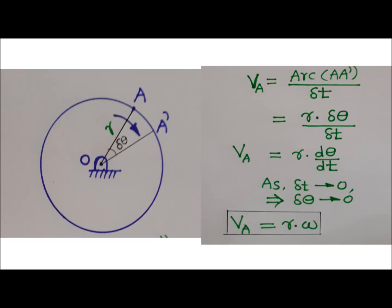We know theta equals arc upon radius. Hence arc will equal theta into radius. Here, the angle subtended by arc A A dash at center O is delta theta. Hence for arc A A dash, we can write arc A A dash equals R into delta theta.